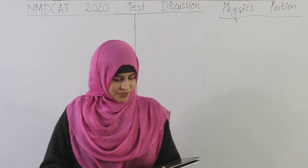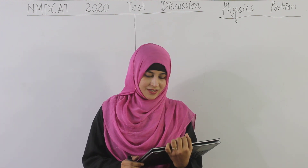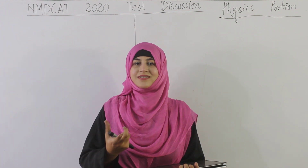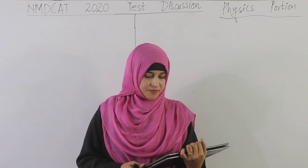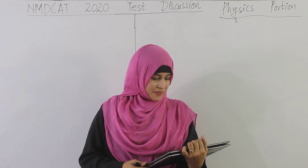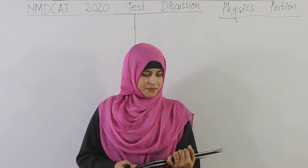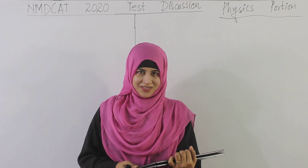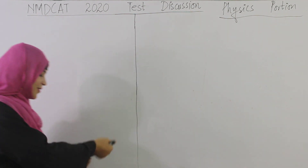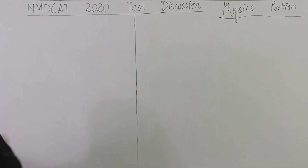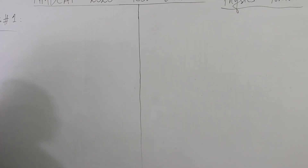MCQ number one: If during circular motion the tangential velocity — the simple velocity of a body — becomes double, then the centripetal force becomes: option A double, option B one half, option C four times, and option D one fourth. The question asks: if the velocity doubles, what happens to centripetal force?